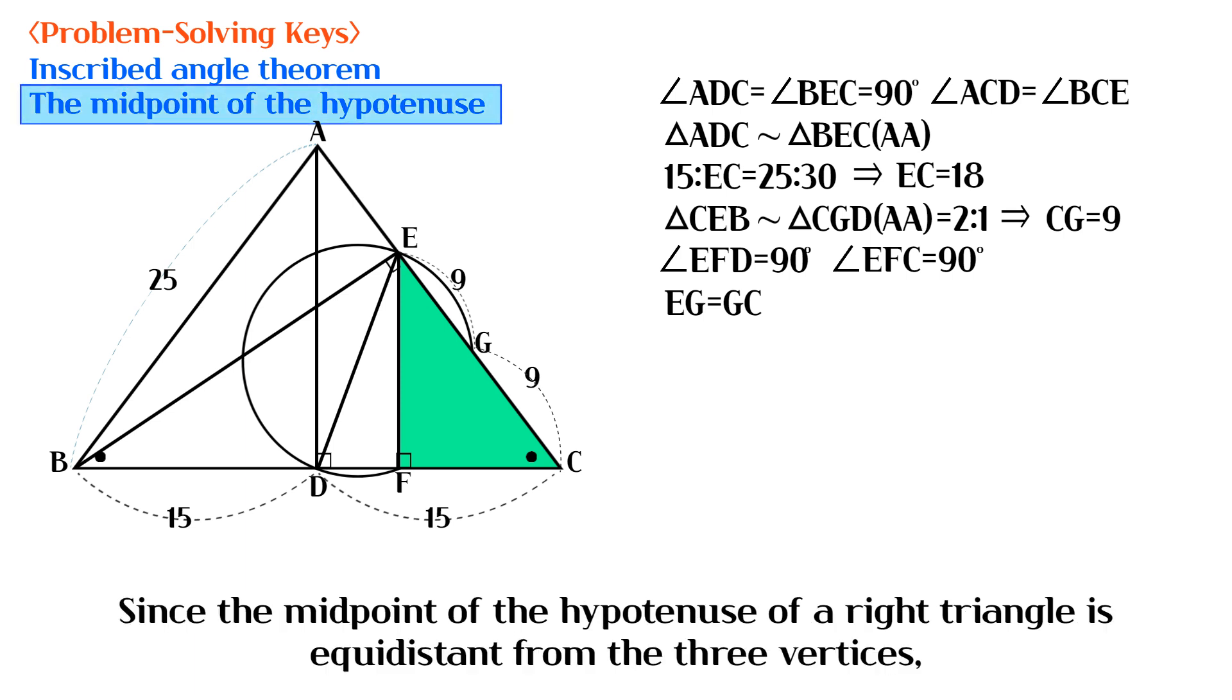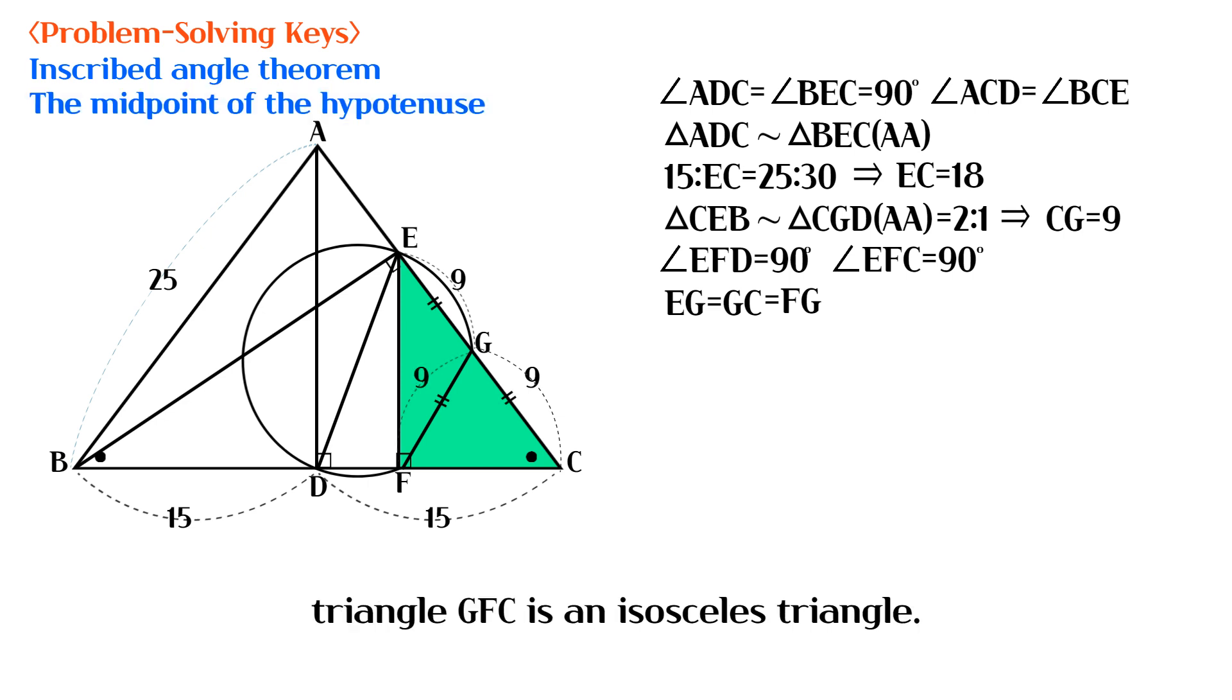Since the midpoint of the hypotenuse of a right triangle is equidistant from the three vertices, triangle GFC is an isosceles triangle.